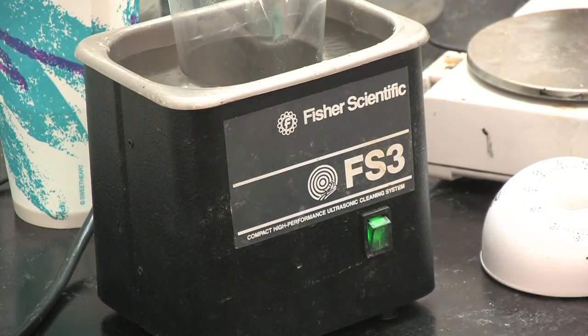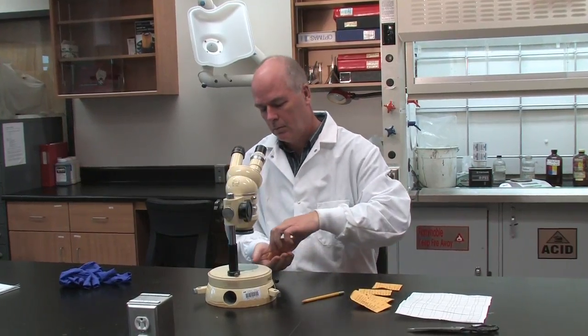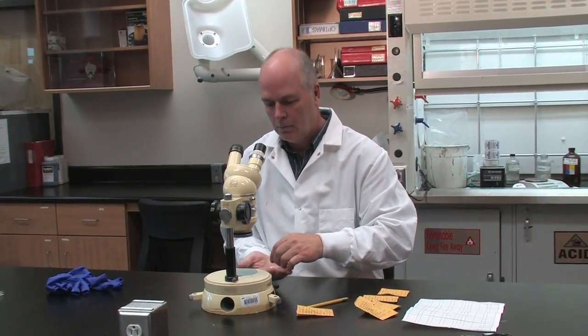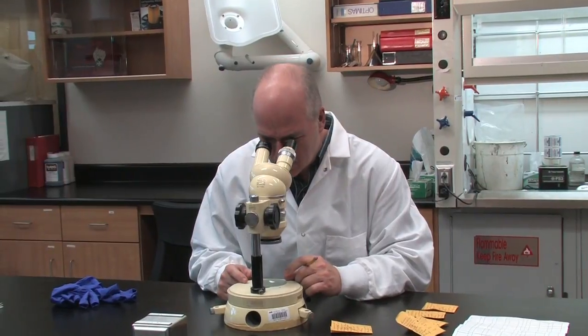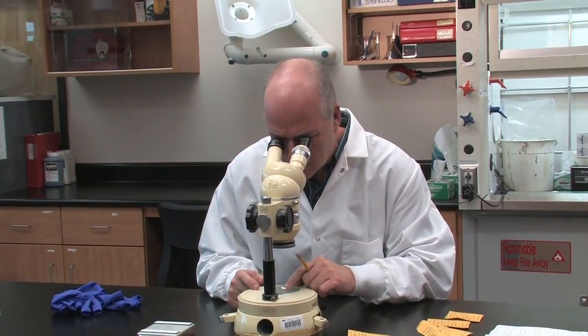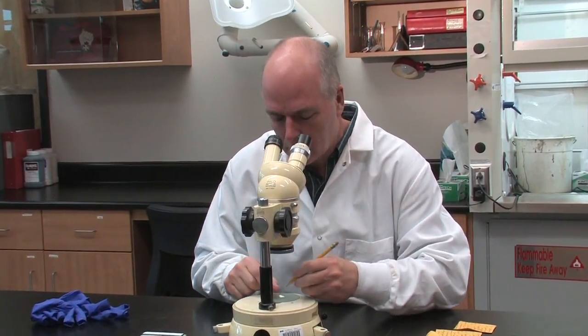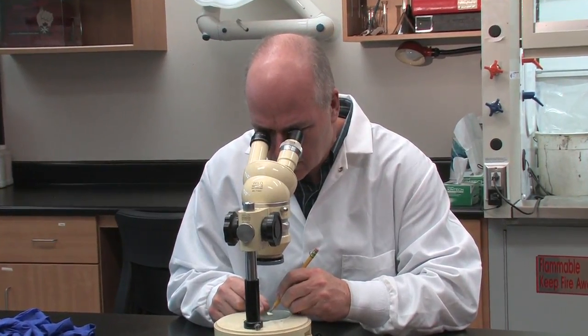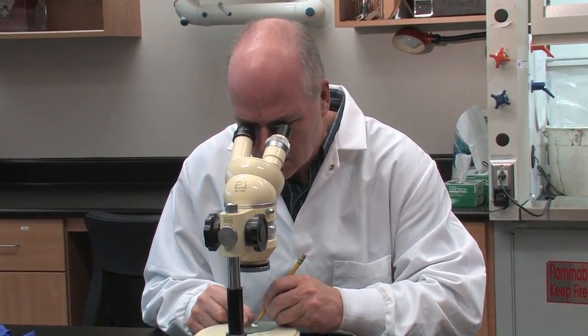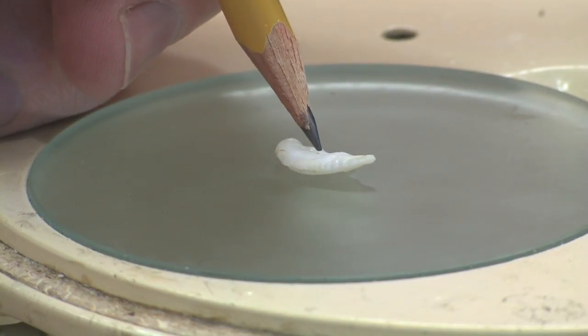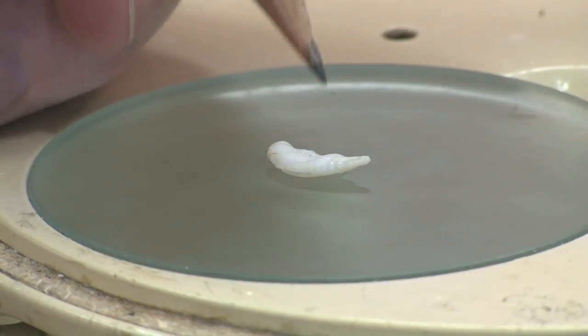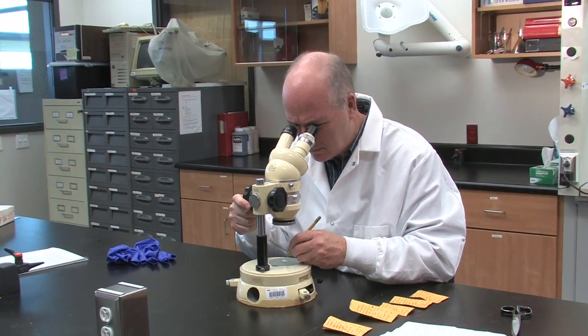While the epoxy is sonicating, you can remove the otoliths from their envelopes and mark the cores. Marking the cores makes it easier to see where to line up the cup when sectioning the samples. In this example, we're embedding redfish. Use a pencil, not a pen, to mark the cores. The marking can be done under a dissection scope as seen in previous videos.